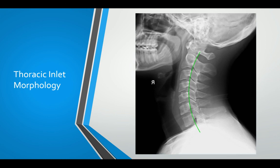The last method we're going to discuss is the thoracic inlet morphology. This is seen as a very complicated method but it allows you to accurately predict what the patient's cervical lordosis should be. The thoracic inlet morphology is made up of three angles: the T1 slope, the inlet angle, and the neck tilt angle. The T1 slope is measured from the superior end plate of T1 compared to horizontal — you draw a line along the superior end plate of T1 and compare it to horizontal, shown by the blue line.